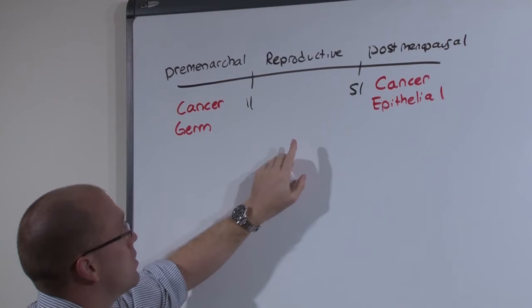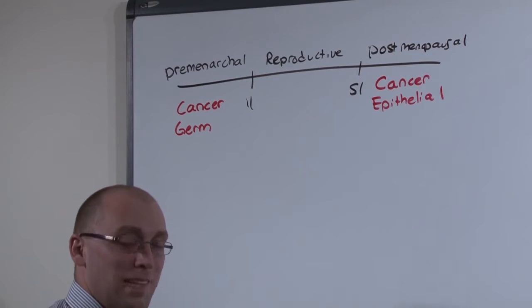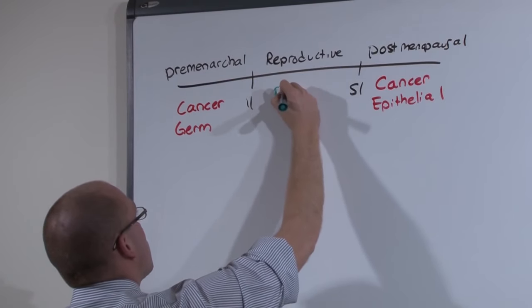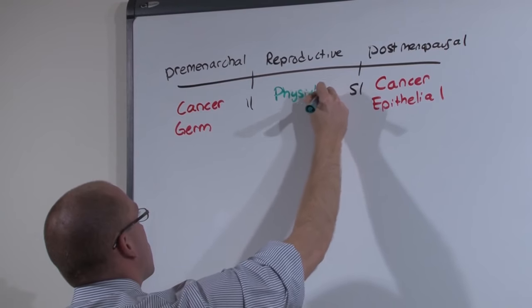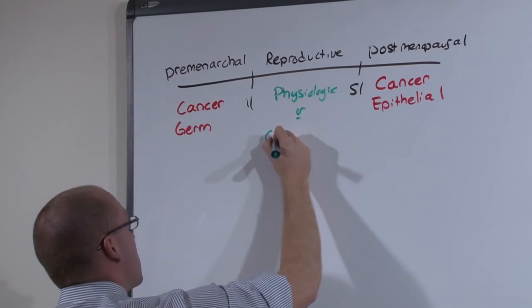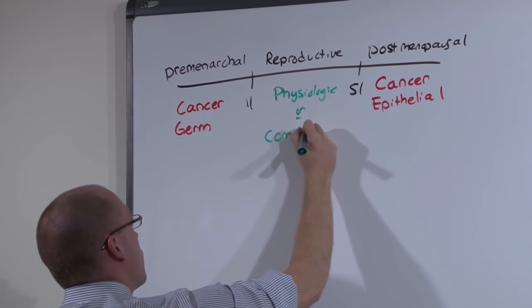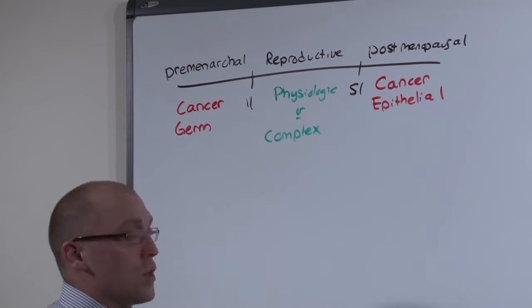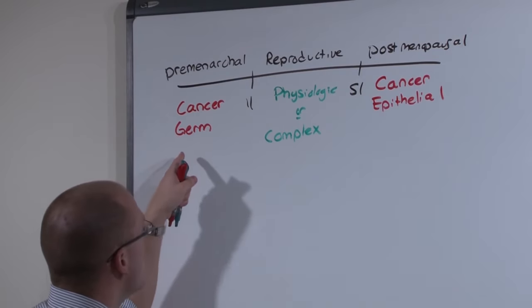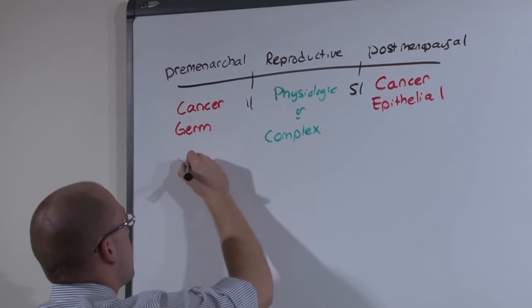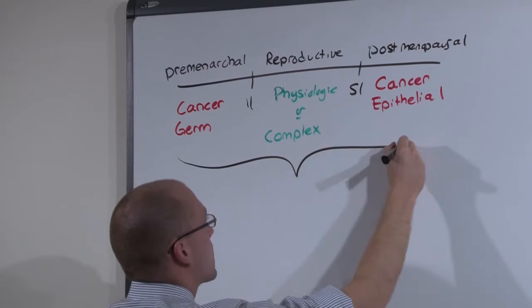In adnexal masses, the only time where they can be normal is in the reproductive age group. They can be physiologic or, if they're not physiologic, that is they are complex, they have a fairly large differential diagnosis. Regardless, if you find an adnexal mass in any age group, what you're going to do is exactly the same.